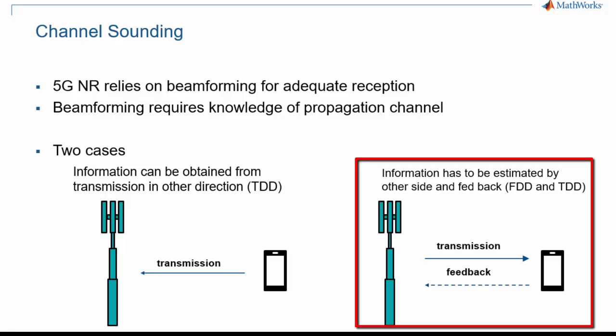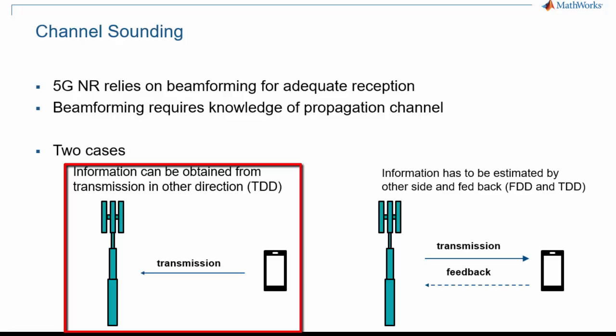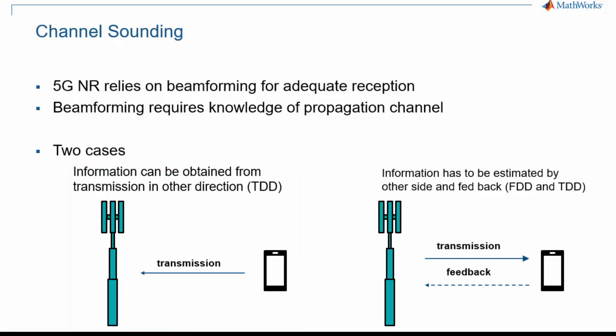This is the case at the bottom right. In the case of TDD, where the uplink and downlink share the same transmit frequency, it is possible to estimate the downlink channel based on measurements on uplink transmission, or the opposite. Whichever case is applicable, special sounding signals are relied upon for both directions. Those sounding signals are the CSI-RS for downlink and SRS for uplink.